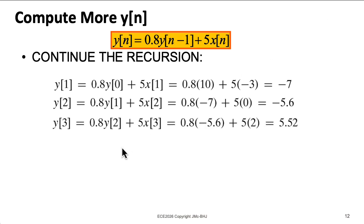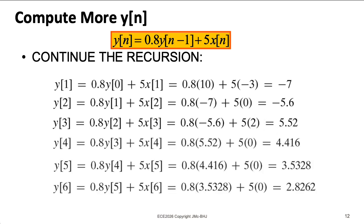We take minus 5.6, plug that in for y[2]. And remember, x[3] was 2. So we compute that out and get 5.52. And at this point, we run out of input. So to get the remaining values, we take this 5.52, and then multiply it by 0.8.